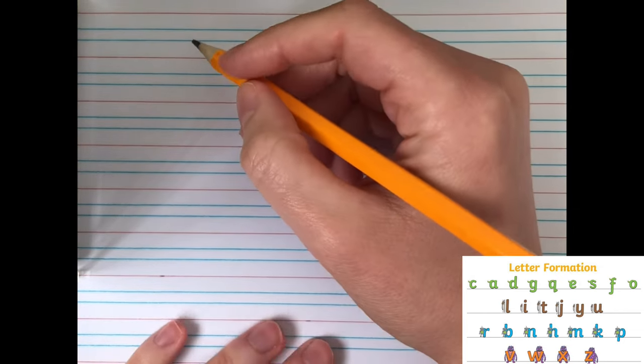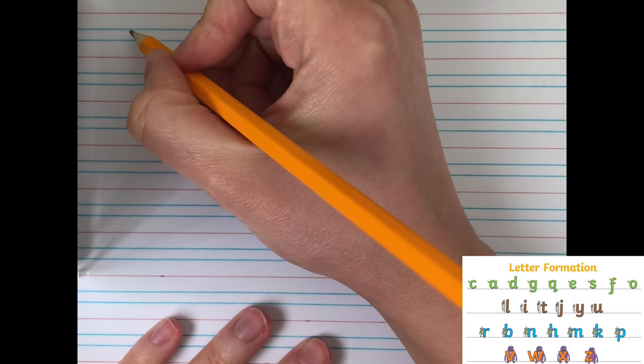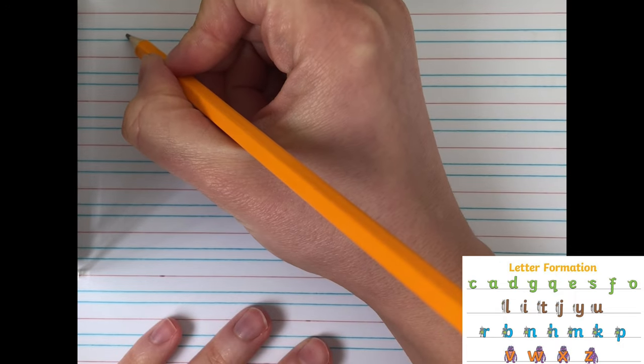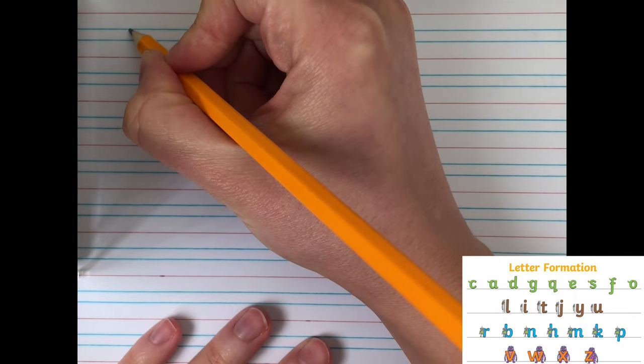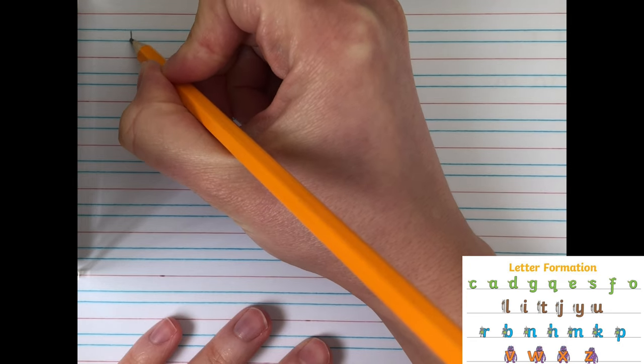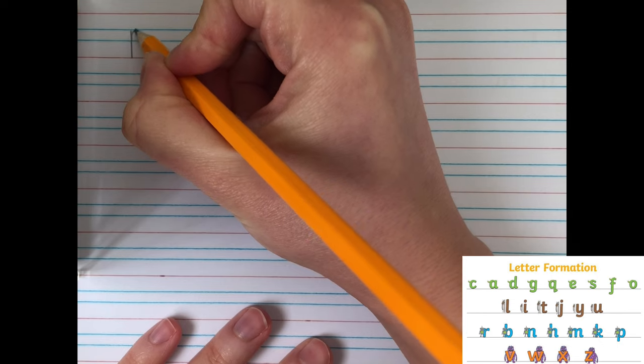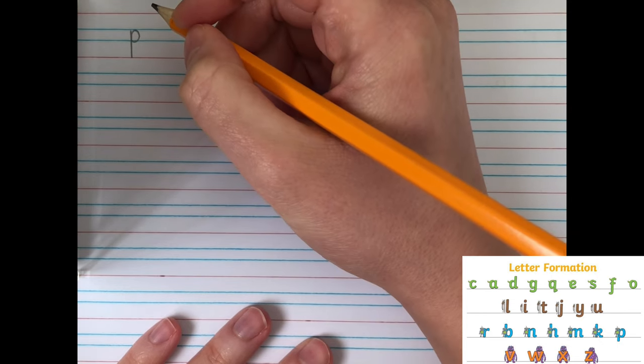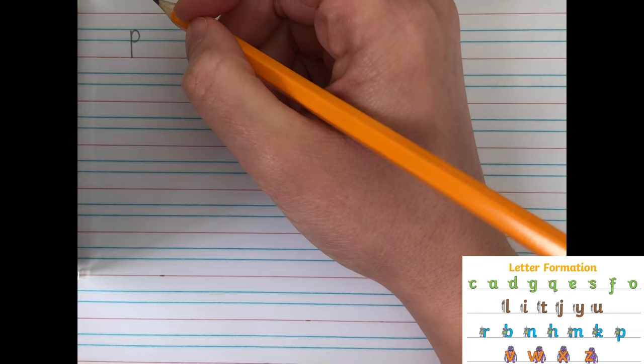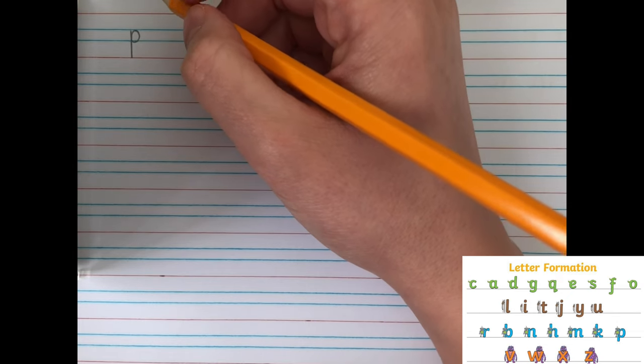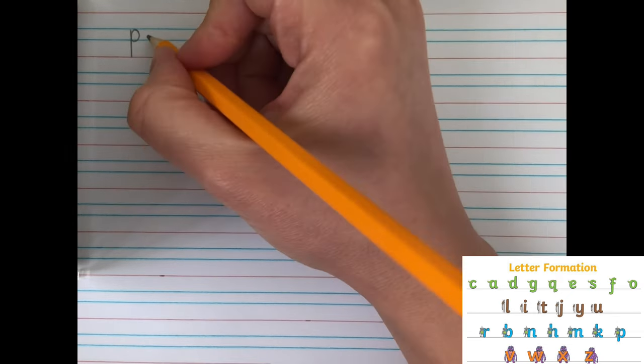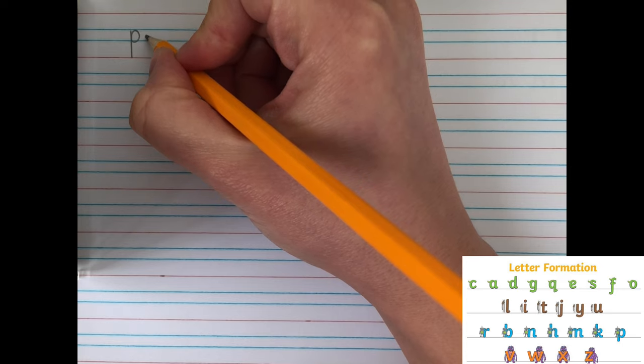We're not going to join it first, we're just going to focus on the letter formation. So the first letter, P, is a one-armed robot, so I'm going to start here and go down to that red line, then back up again and round. Now, E, what kind of letter is E? That's right, it's a curly caterpillar, so I'm going to fit it in between these blue lines.